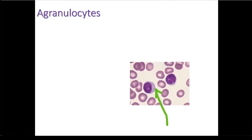Now let's look at the agranulocytes. Recall that they don't have visible granules when they are stained. Their cytoplasm looks a pale blue.